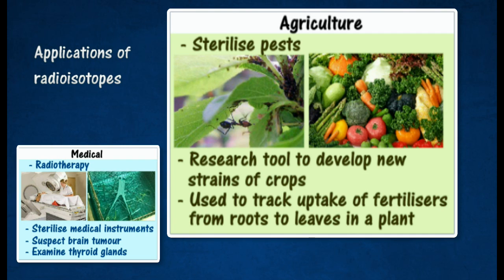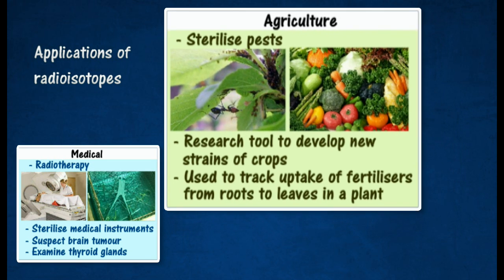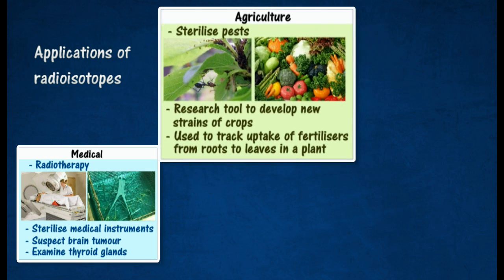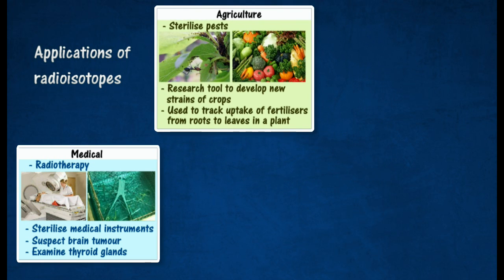Radioisotopes are used as a research tool to develop new strains of crops that are resistant to disease, with higher quantity and quality yield. Radioactive phosphate in soil water is used to track uptake of fertilizers from roots to leaves in a plant.